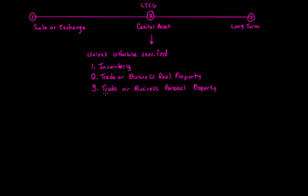You'll notice the phrase 'trade or business.' From previous videos, we talk about the big three categories of activities when it comes to deductions: trade or business activities, investment activities, and personal activity. Personal in nature means like your personal residence or property you only use in personal activity. We're talking about the trade or business aspect of the big three — not investment, not personal in nature. Trade or business, determined under that set of law.